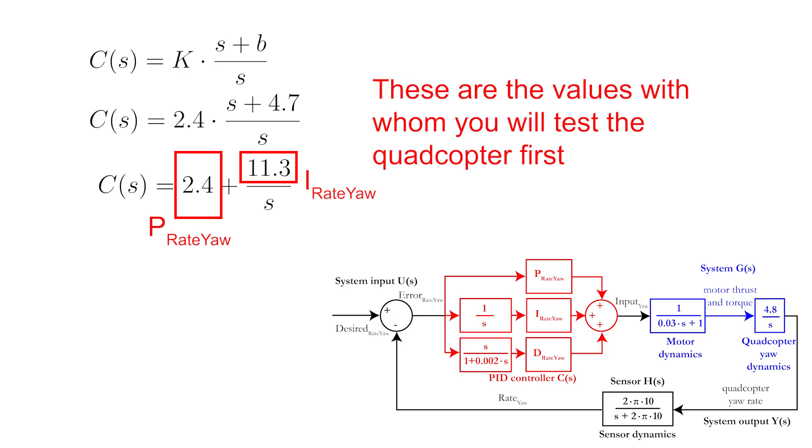Now these are the values with which you will test the quadcopter drone first. You will tweak these values a bit according to your liking. I ended up with the values 2 and 12, which is very close to the theoretically calculated values.